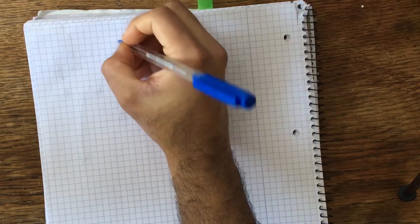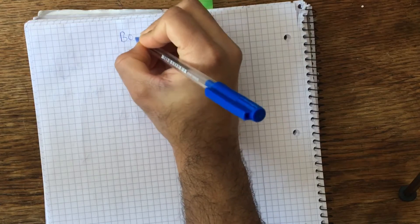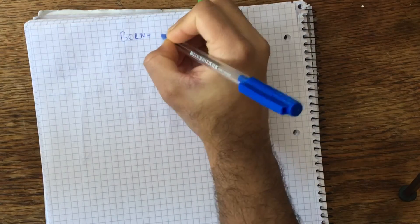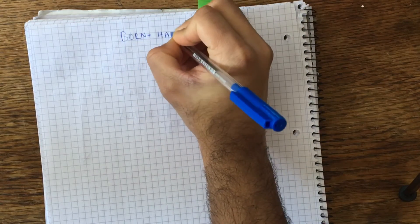Hey, and welcome to the Half-Blood Prince channel. Today we're going to be talking about the Bornhaber Cycle, which is basically an extension of Hess's Law.